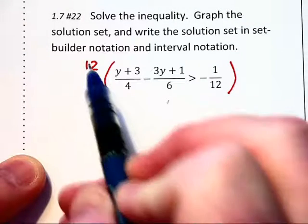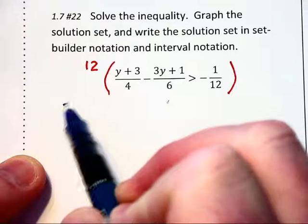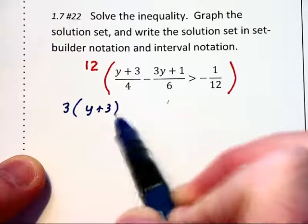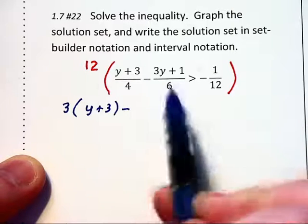In the first fraction, the 12 cancels with the 4, leaving 3. So we have 3 times y plus 3 minus, and then the 12 cancels with the 6.